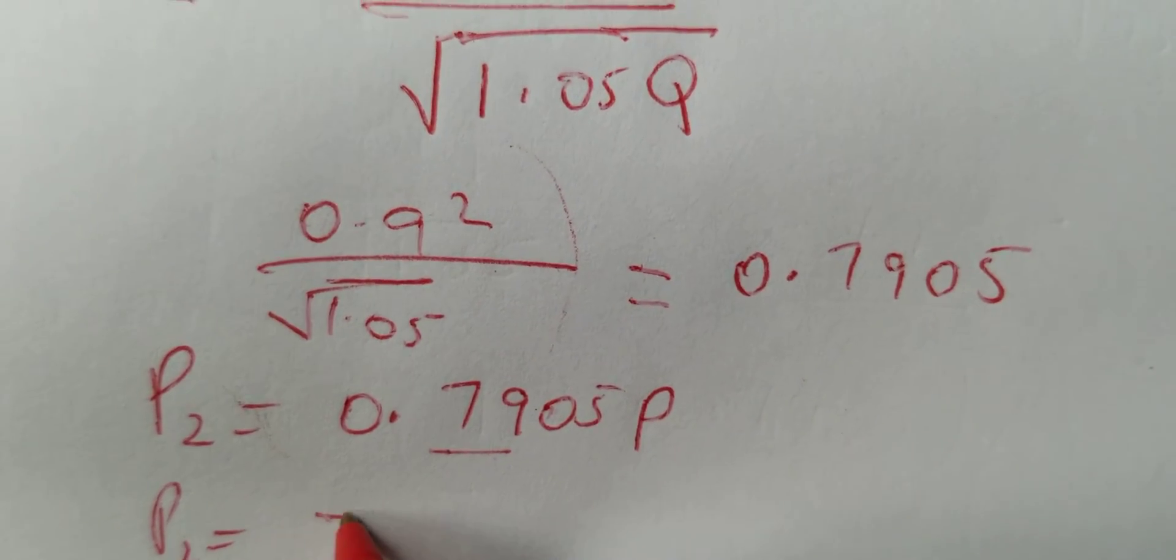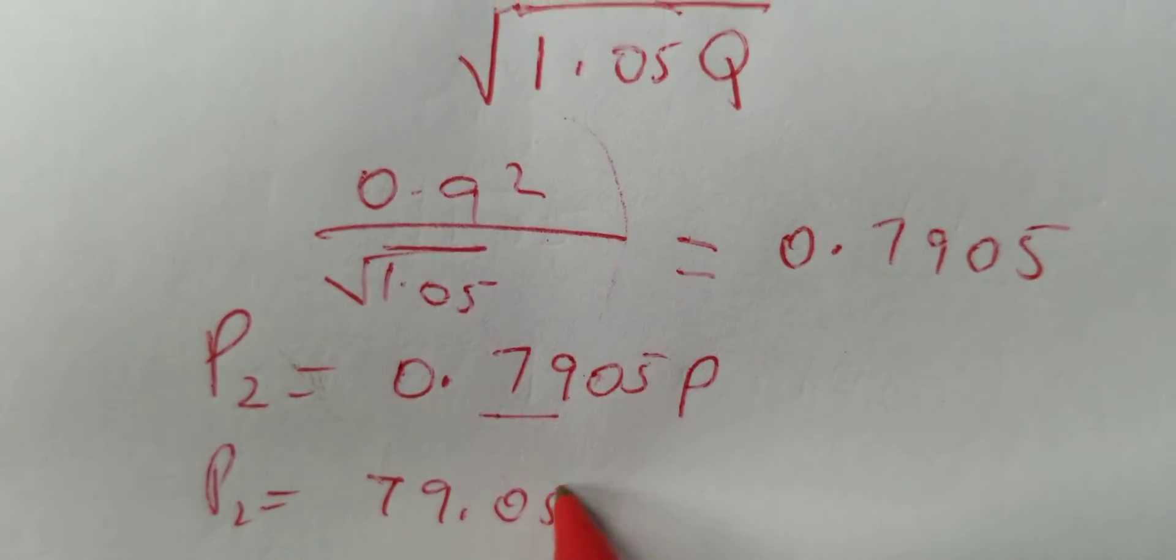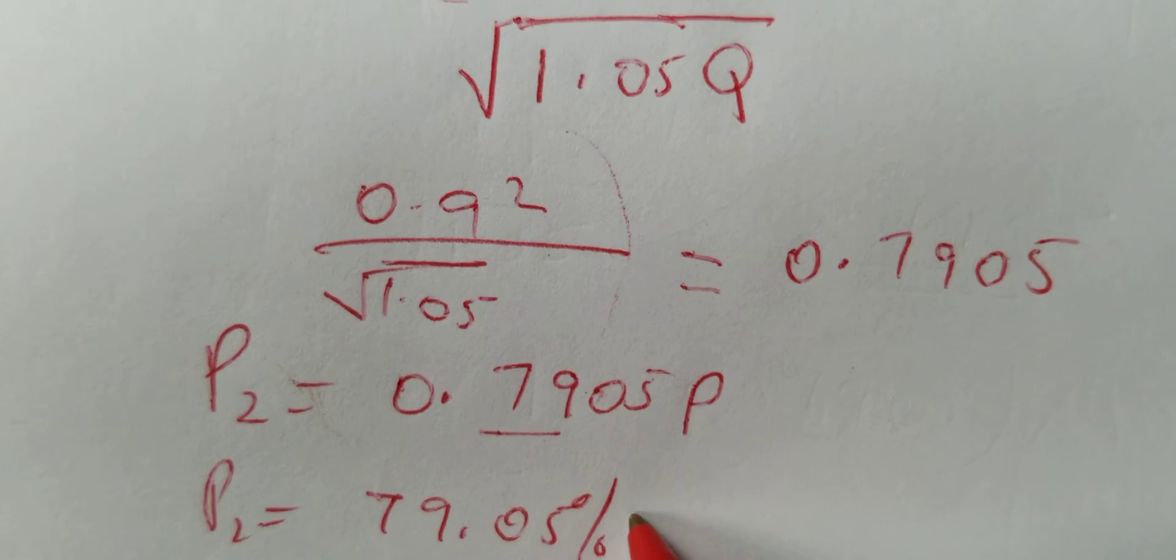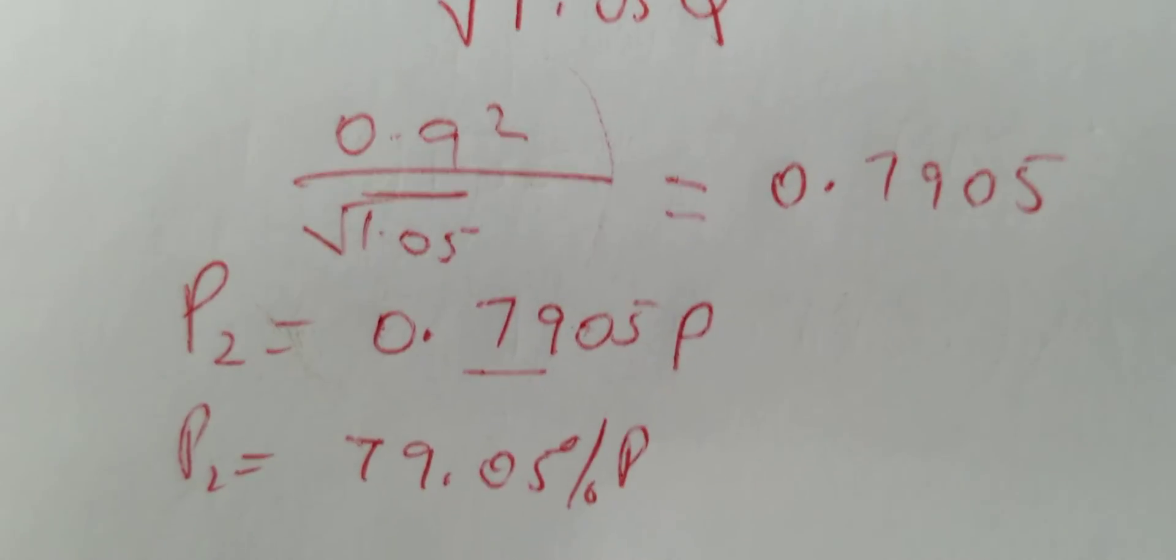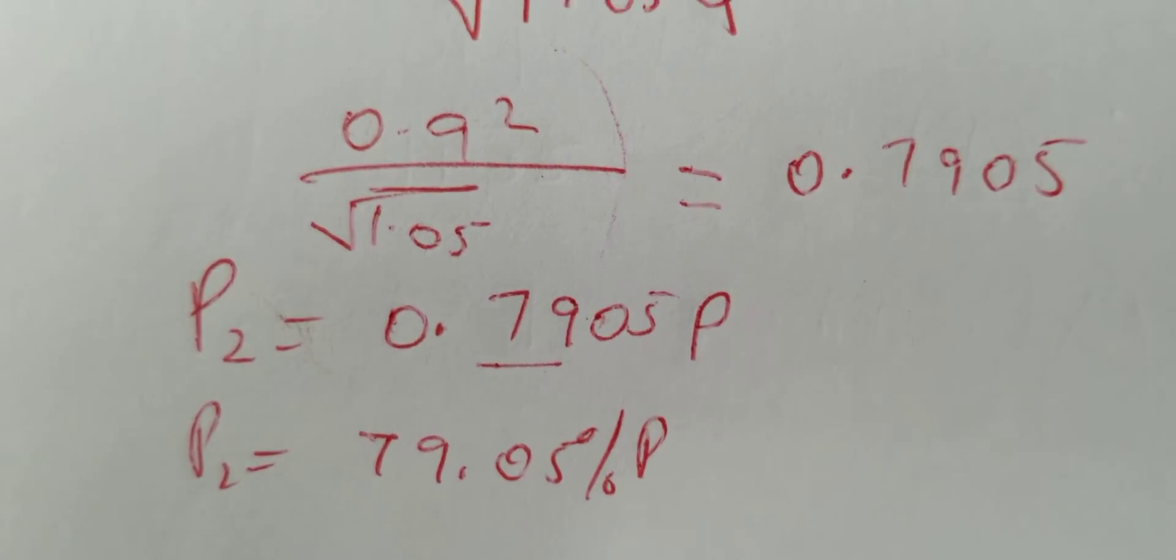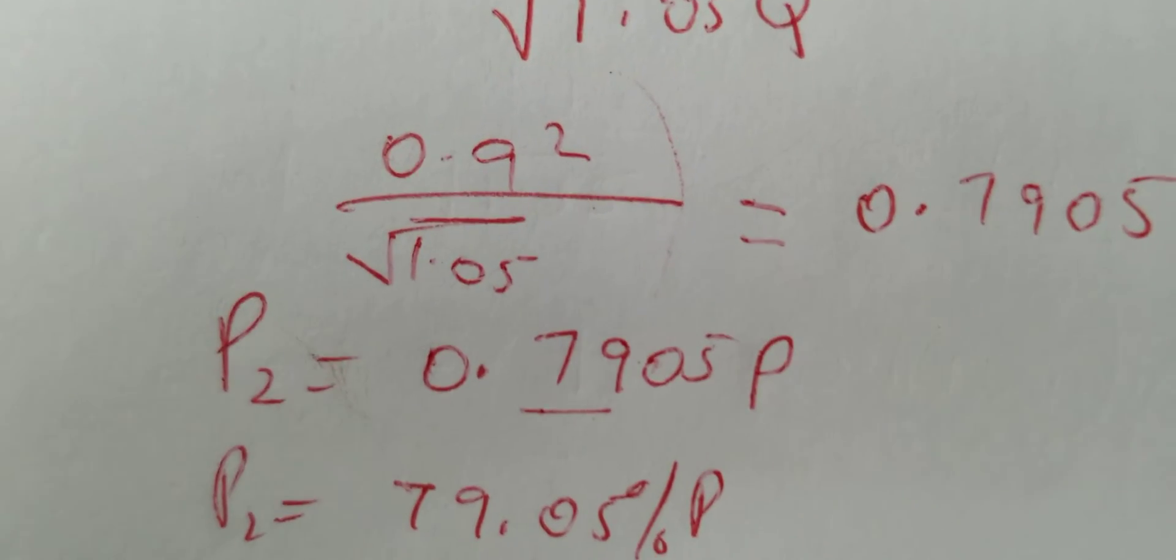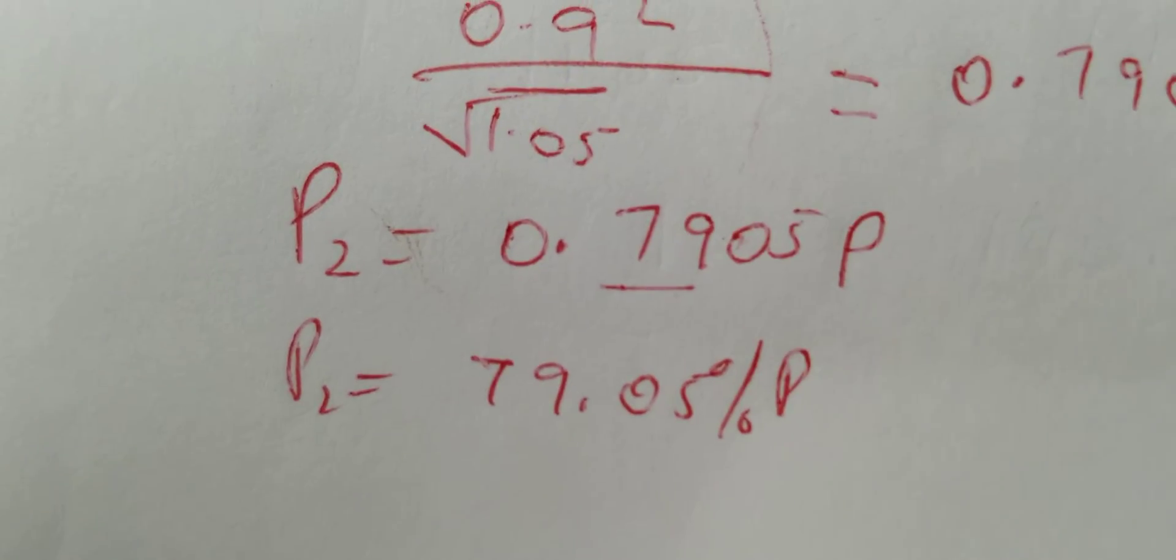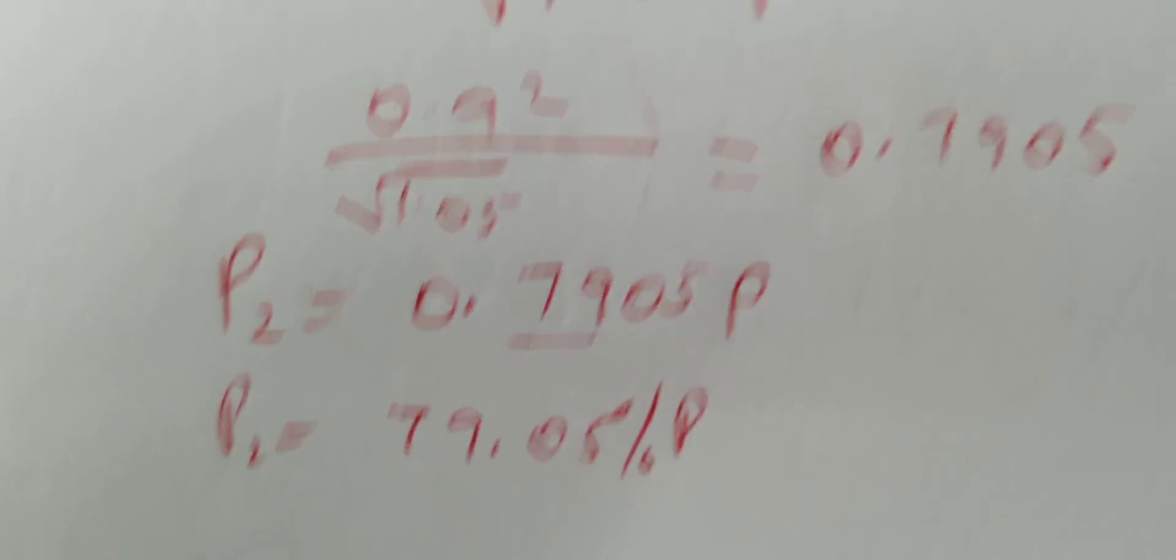So P2 will be, if you multiply this by 100, it will be 79.05 percent of the original P. So how do I get the change? P was 100 percent, just like we had taken Q to be 100 and R to be 100.